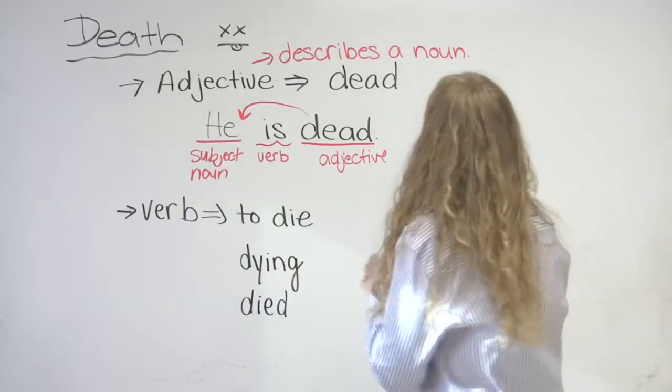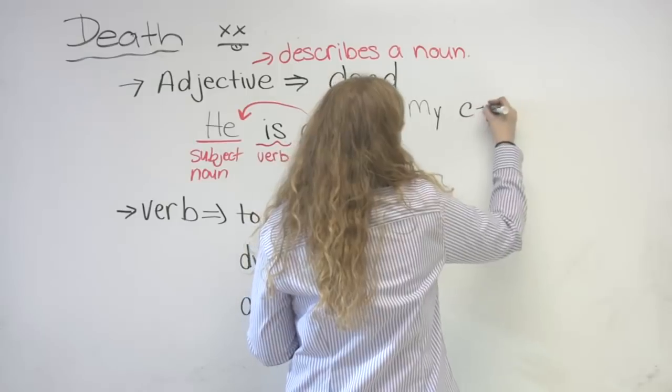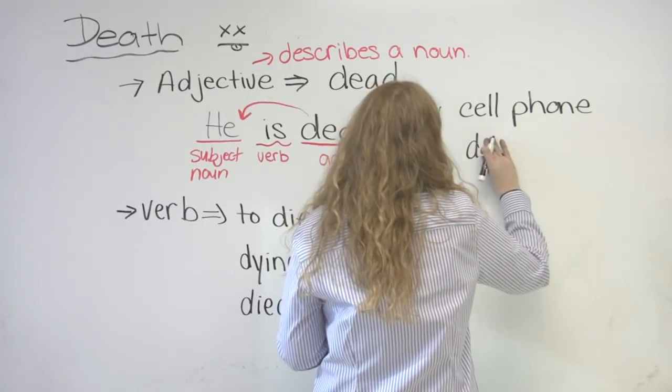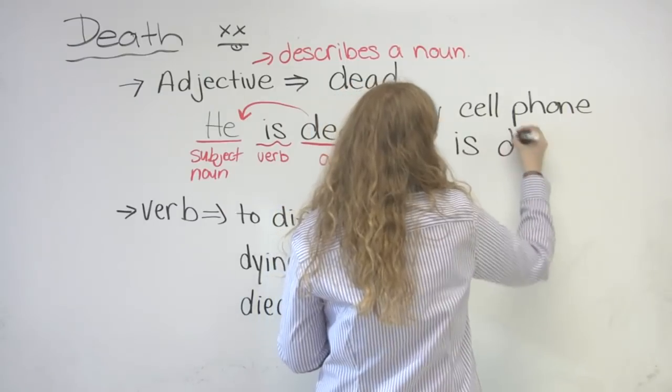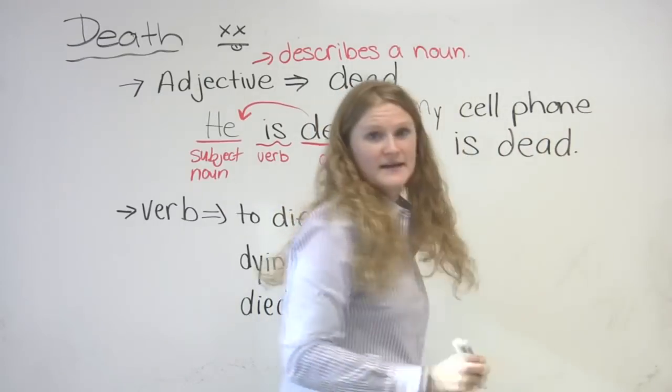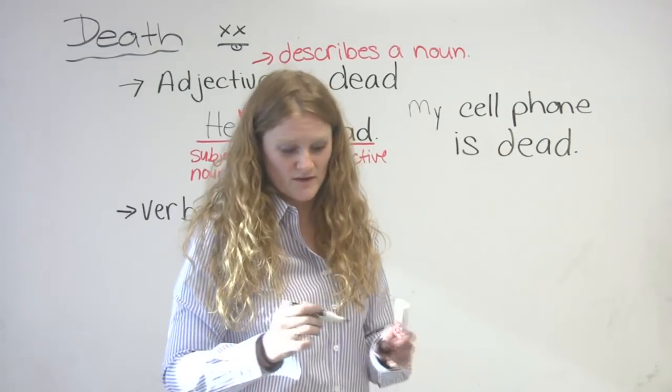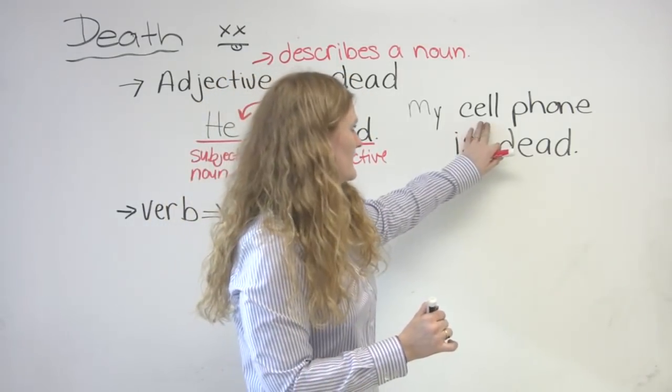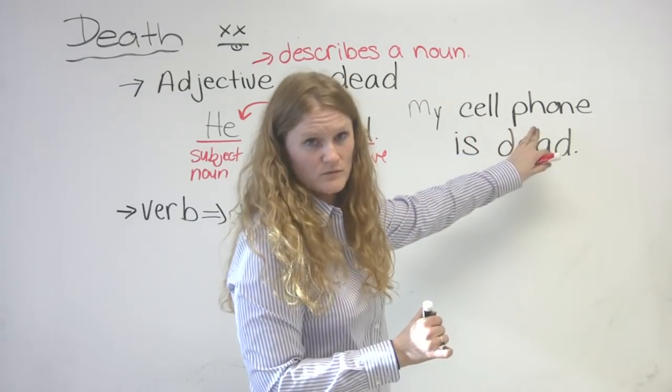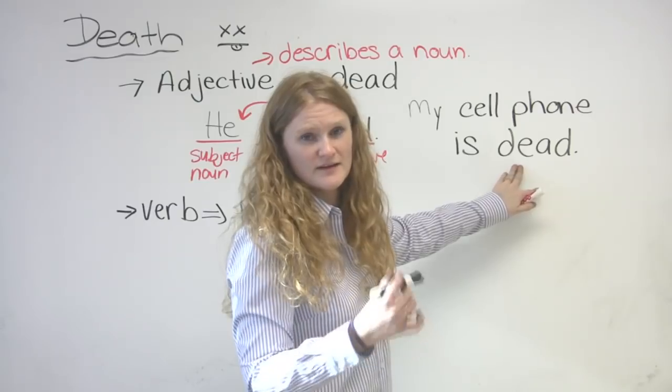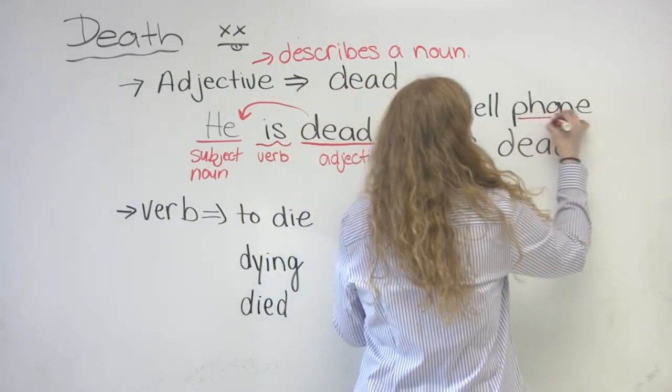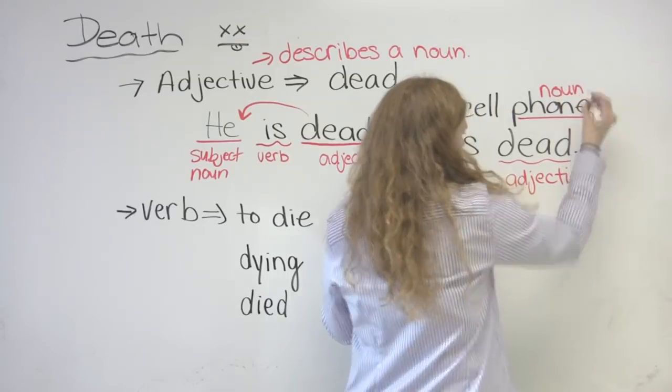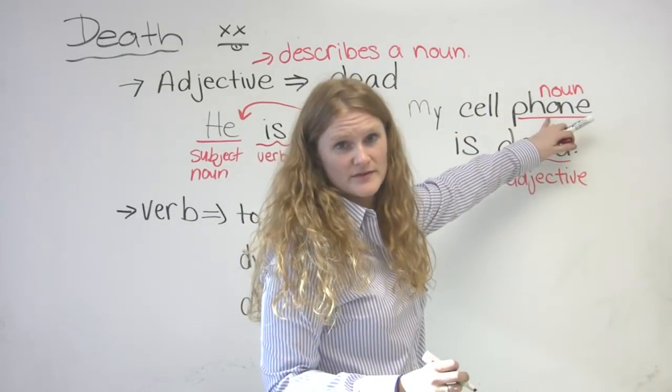So we don't only have to use this with people. We can say, for example, my cell phone died. My cell phone is dead. That means your cell phone is not going to work. You need to take it back to your house and put some battery life back into it. Again, the noun is your phone and your cell phone is dead. So that's the adjective. An adjective always talks about or describes the noun.